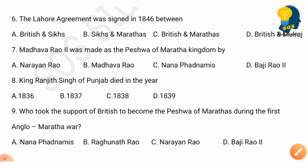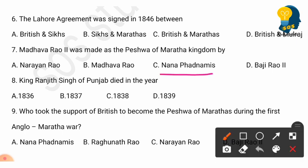Question 7: Madhava Rao Second was made Peshwa of the Maratha kingdom by — options: Narayan Rao, Madhava Rao, Nana Phadnavis, and Bhaji Rao Second. The correct answer is option C: Nana Phadnavis. Madhava Rao Second was made Peshwa of the Maratha kingdom by Nana Phadnavis.